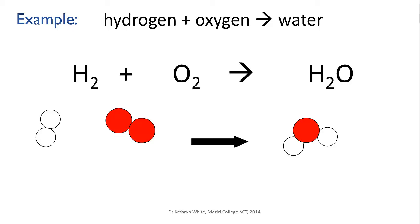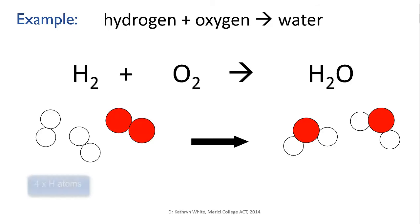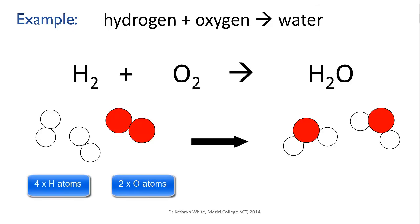So how else can we get another oxygen on the right? Well, the only other option is to have another water molecule. Now our oxygen is fine — we've now got two on the left and two on the right. But our hydrogen is unbalanced: we've got two on the left and four on the right. We just need a little more hydrogen on the reactant side. And now we're good — four hydrogens and two oxygens on the left, and four hydrogens and two oxygens on the right, rearranged into two water molecules.